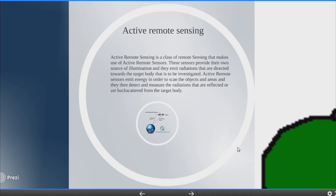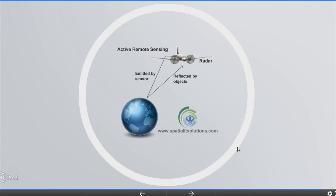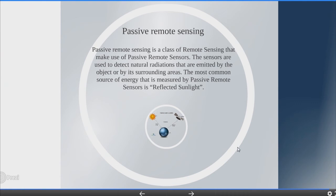Active remote sensing is a class of remote sensing that makes use of active remote sensors. These sensors provide their own source of illumination and emit radiation directed towards the target body to be investigated. Active remote sensors emit energy in order to scan objects and areas, and then detect and measure the radiation that is reflected or back-scattered from the target body. Here we can see the diagram of active remote sensing.